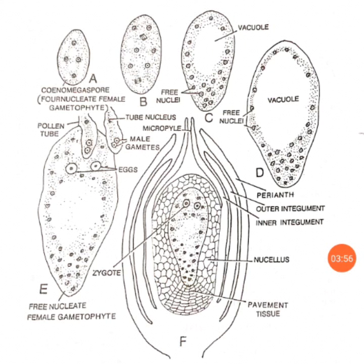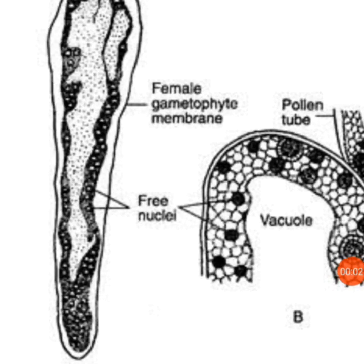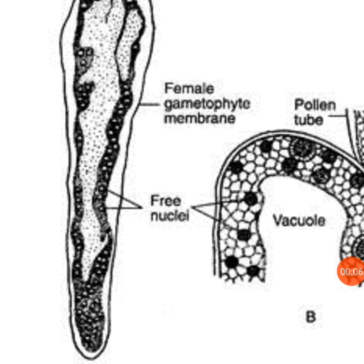Wall formation starts from the basal or chalazal end of the female gametophyte and proceeds upward, but wall formation takes place only in the basal region — that is an important point to remember. The upper part nuclei remain free, while wall formation begins at the lower basal portion. In the figure the female gametophyte shows three nuclei throughout, with a large vacuole toward the opposite side at the center.